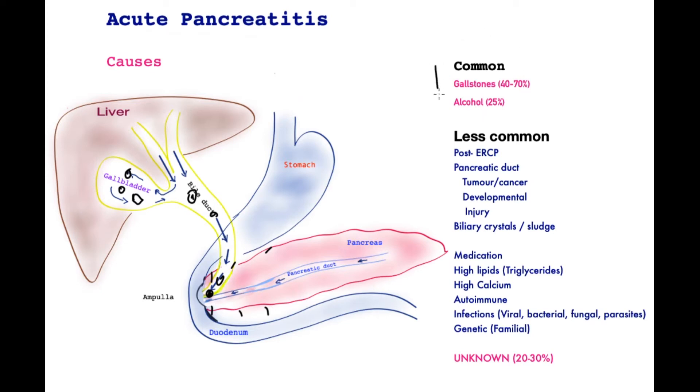The other common cause is alcohol, and this accounts for about a quarter of the cases of pancreatitis. Between these two — gallstones and alcohol — they account for two-thirds of the cases.